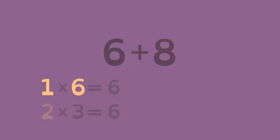Let's look at this problem mathematically. The total number of vegetables is six plus eight. One and six multiply to make six. Same with two and three. So the factors of six are one, six, two, and three.